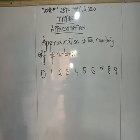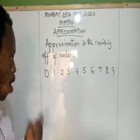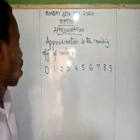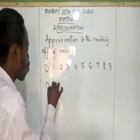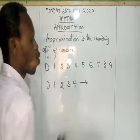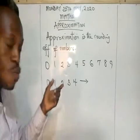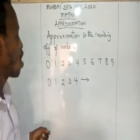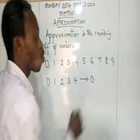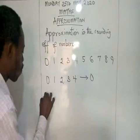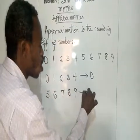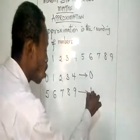But in the world of approximation, all these 10 digits are grouped into two. From 0, 1, 2, 3, and 4 — in the world of approximation, these are approximated or represented as 0. Then 5, 6, 7, 8, and 9 are represented as 1.